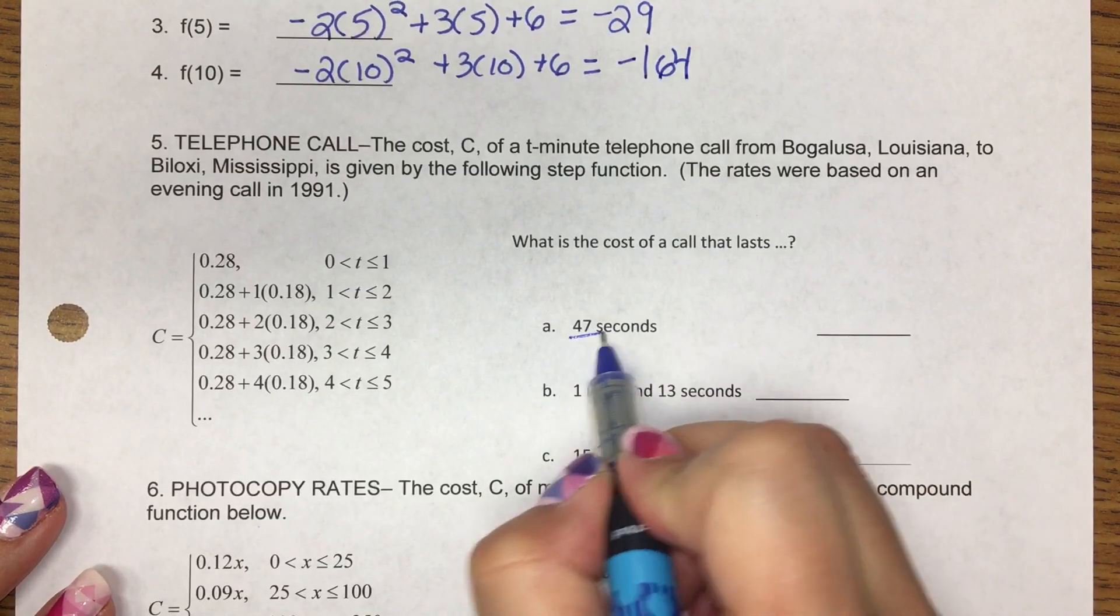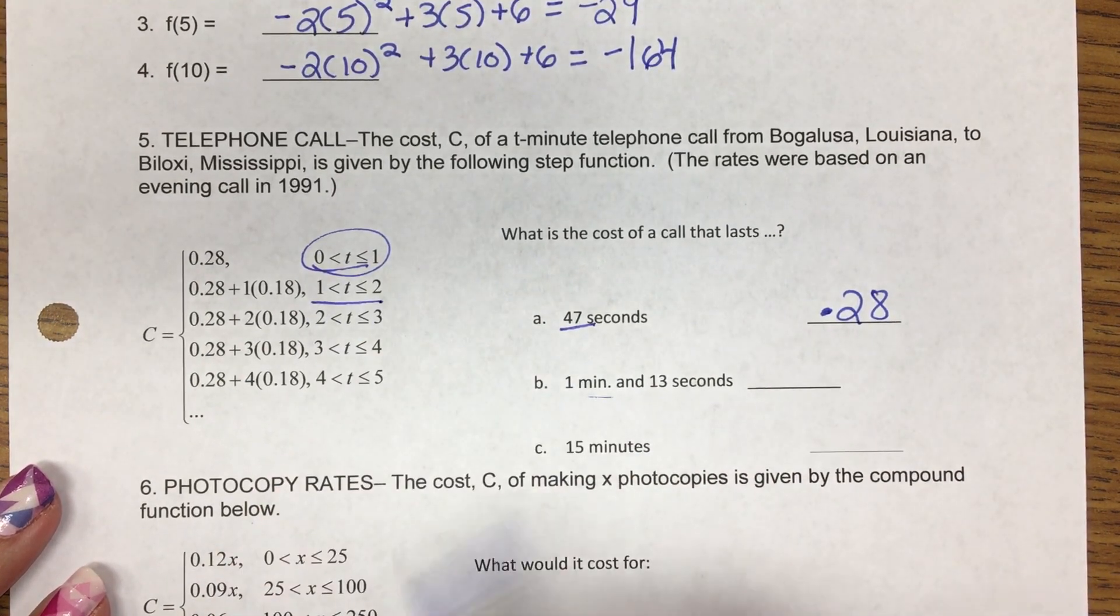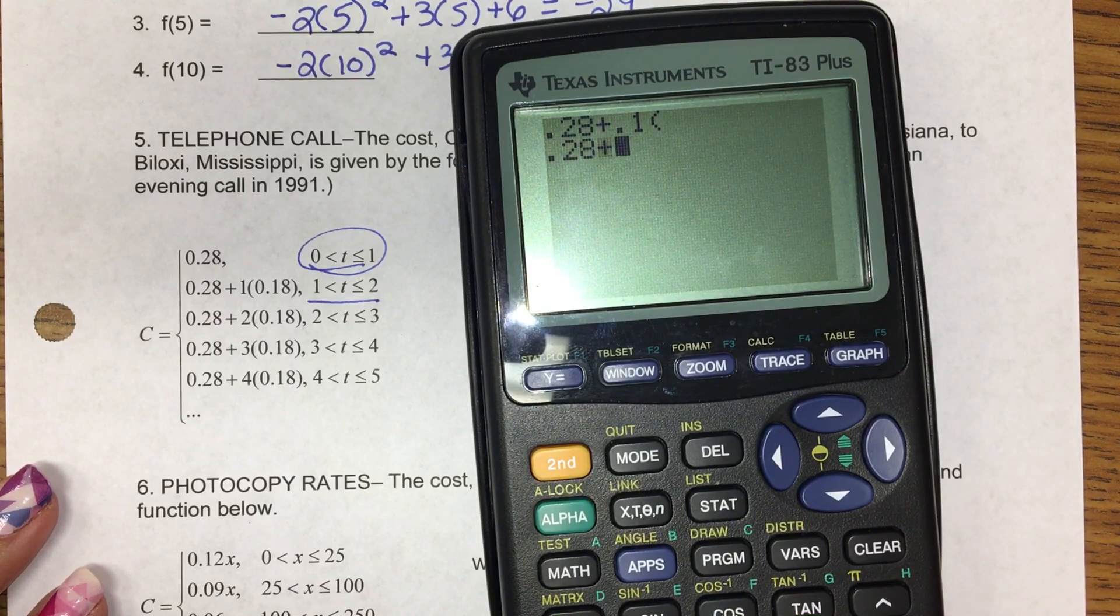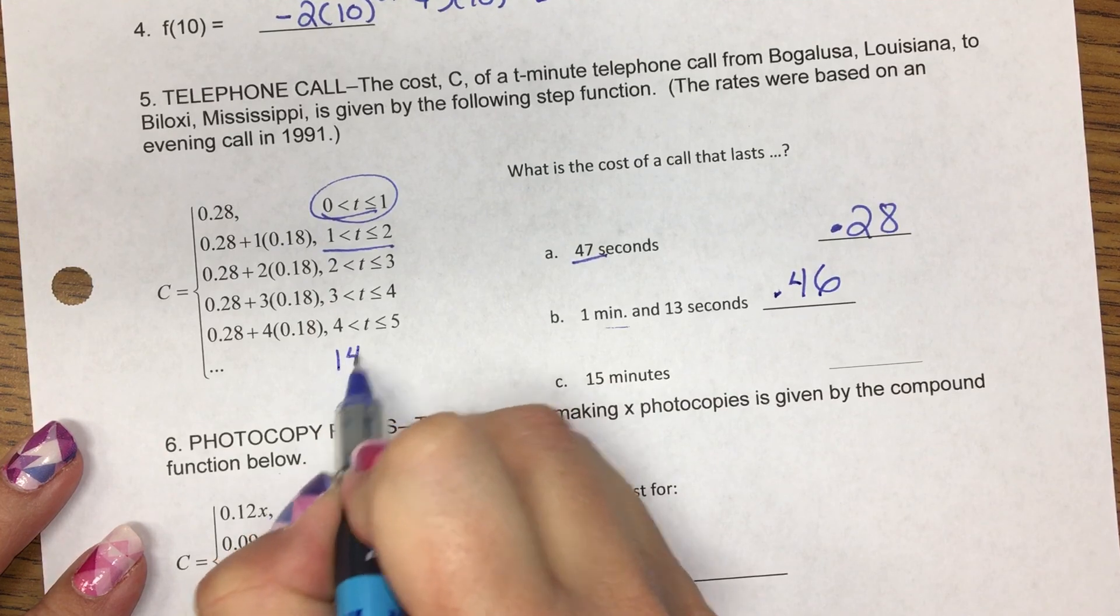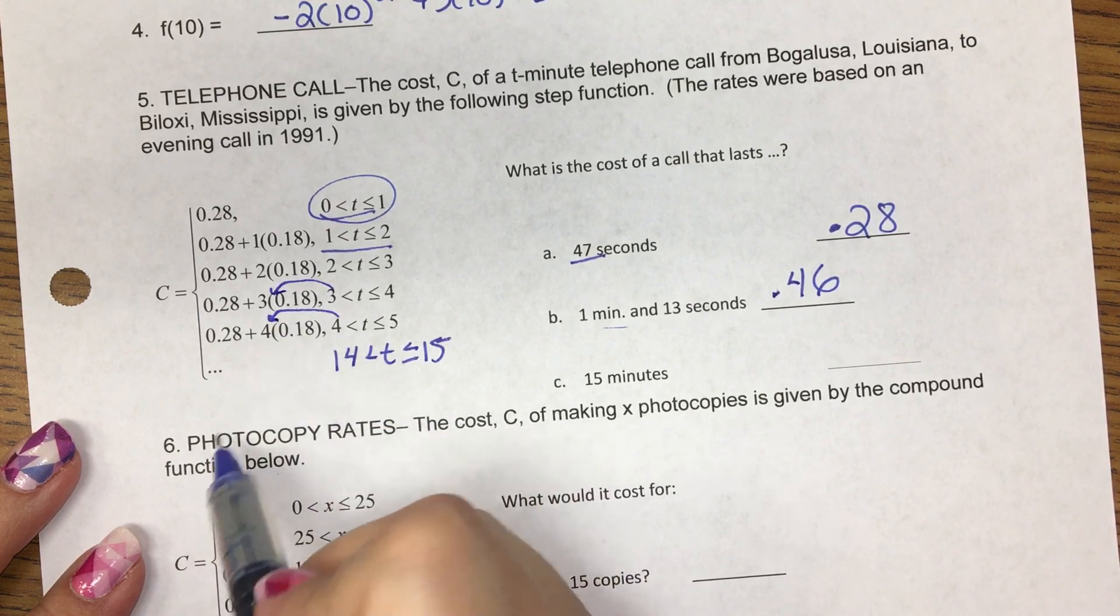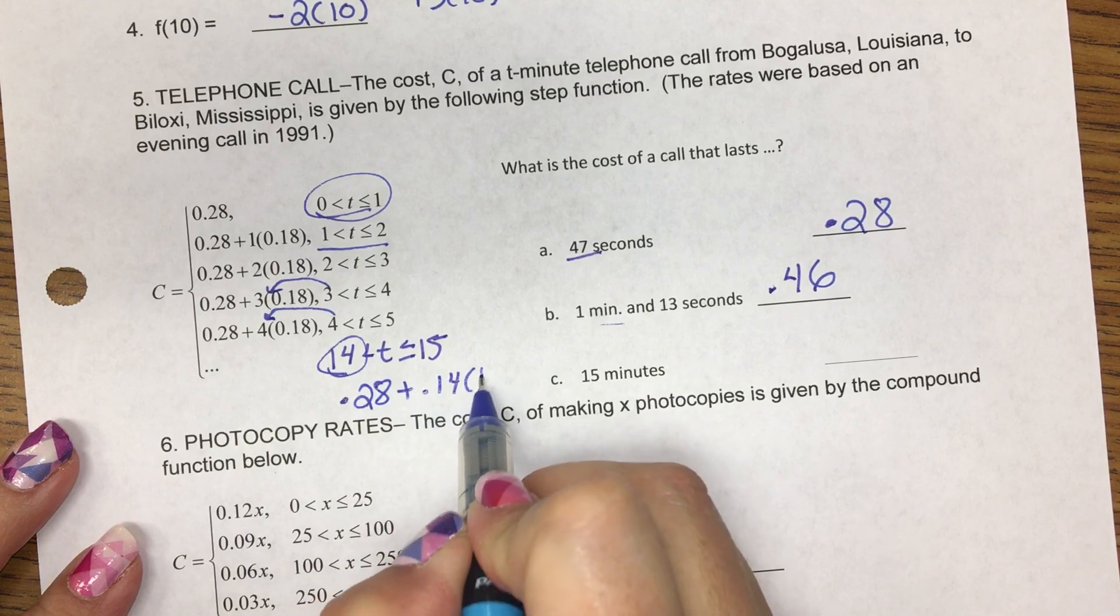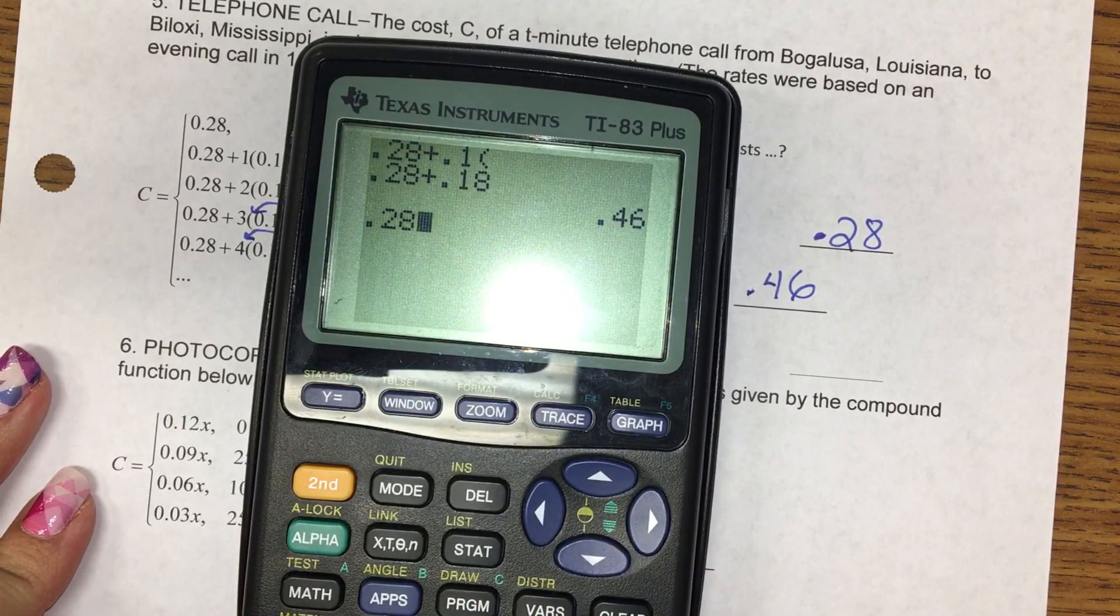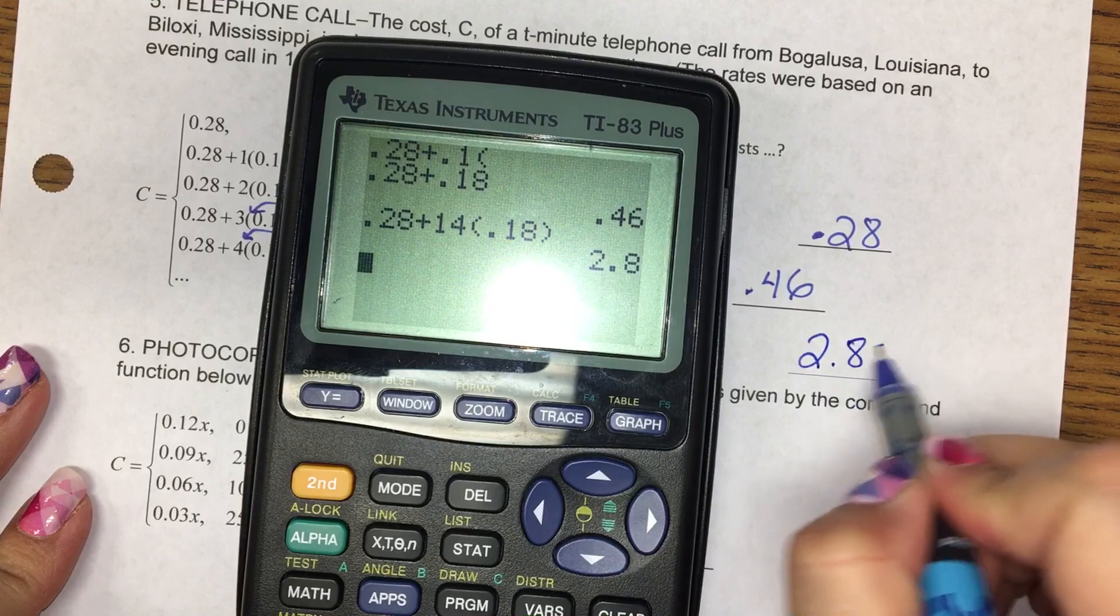More telephones. 47 seconds is between 0 and 1, so that's 28 cents. A minute 13 seconds is between 1 and 2. 46 cents. Okay, 15 minutes is exactly or equals. So if I look at this pattern again, the 14 is going to be times the 18 cents. So it would be 28 cents plus 14 times 18 cents. And that's $2.80 for that phone call.